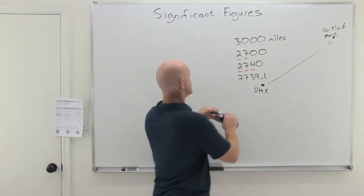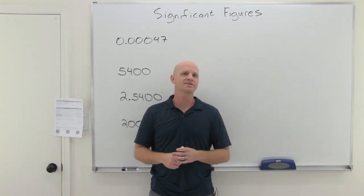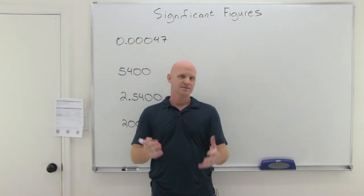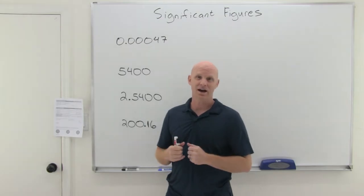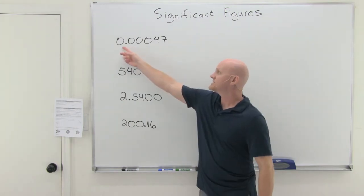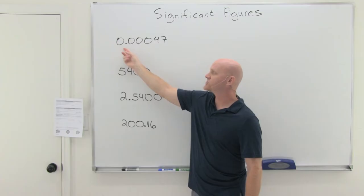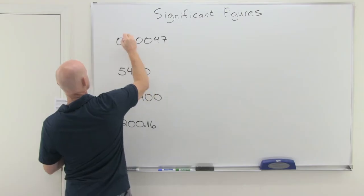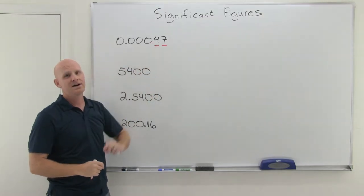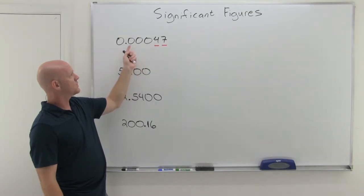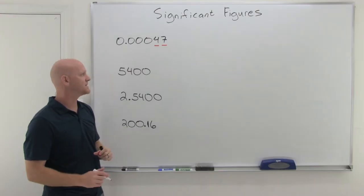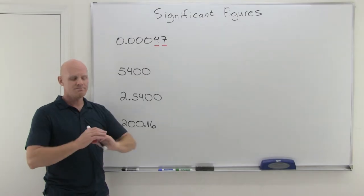Let's take a closer look at sig figs. The first thing we're going to deal with are the zeros. Any numbers that are non-zero are going to be significant — the tricky ones are the zeros. Sometimes they're significant and sometimes they're not, and we've got some rules for this. The first rule is if your number starts off with zeros, those zeros are never significant. Here we've got 0.00047, and the number starts off with all zeros — those zeros are not significant. As a result, this number only has two significant figures: the four and the seven.